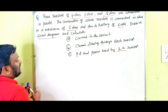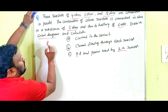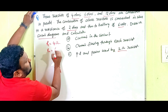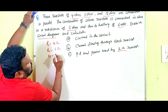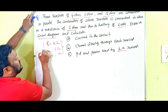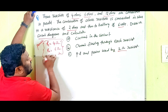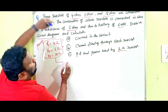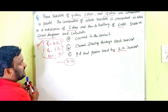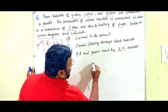According to the problem, first see how to draw the diagram. R1 is 4 ohms, R2 is 6 ohms, and R3 is 12 ohms. These three are connected in parallel. Then these three are connected in series with the 2 ohms resistor, and after that the battery.